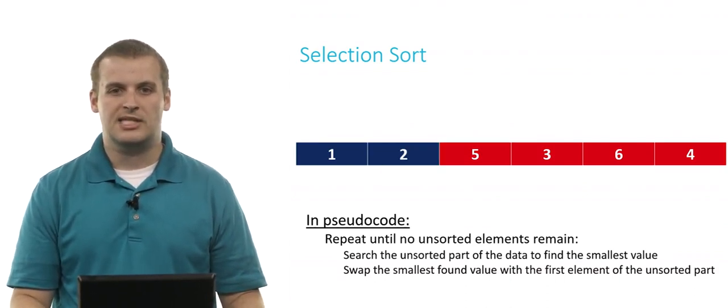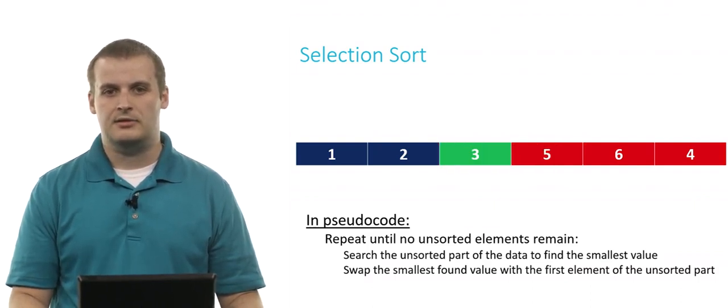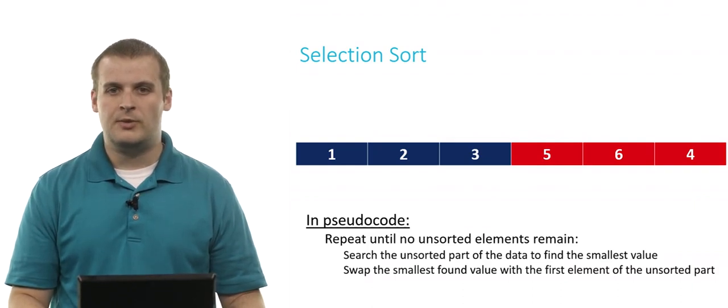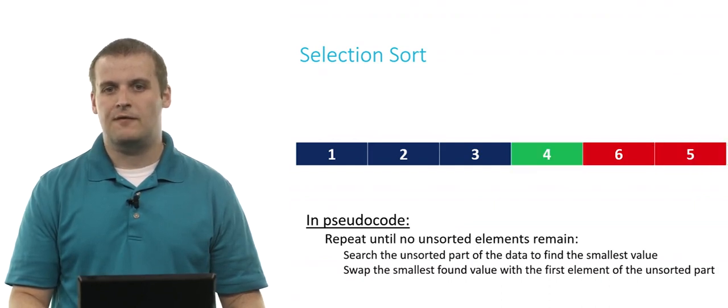Continuing on, we search through to find the smallest element. It's 3. We swap it with the first element, which is 5, and now 3 is sorted. We search through again, we find the smallest element is 4. We swap it with the first element of the unsorted part, and now 4 is sorted.